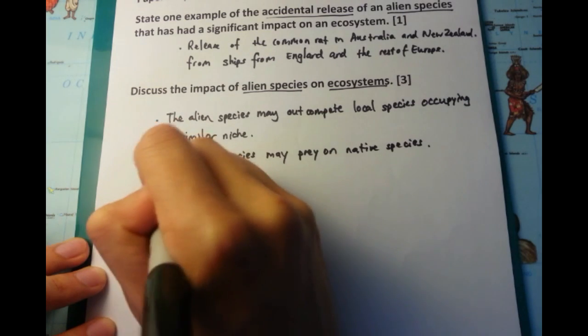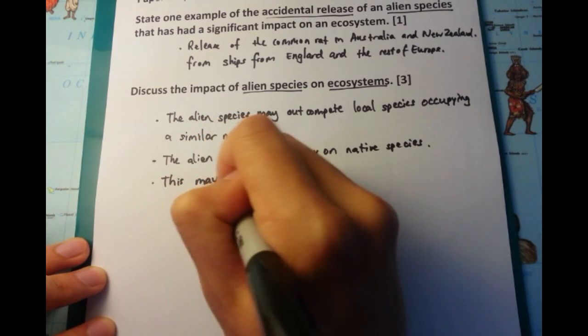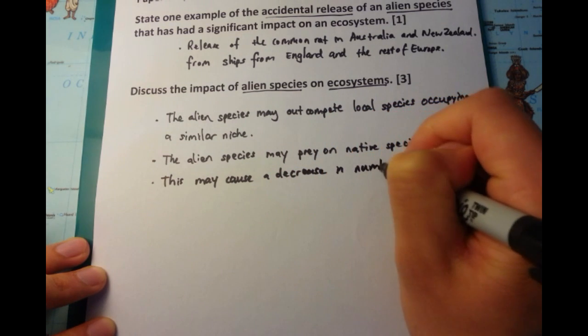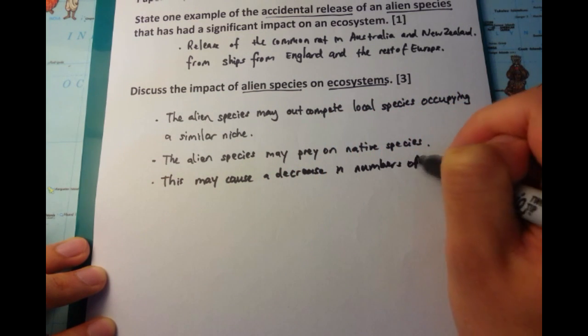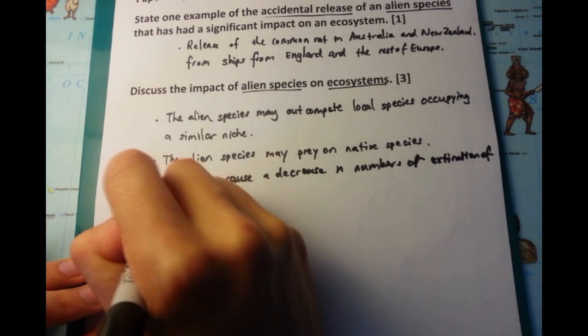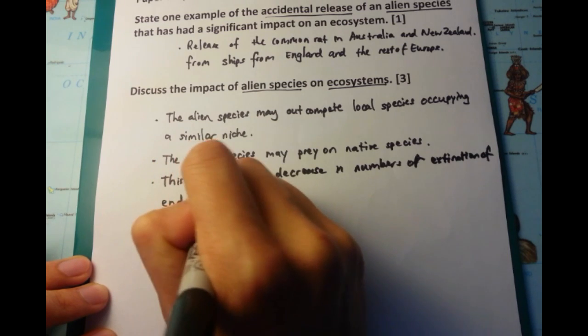So apart from outcompeting them, the alien species might directly contribute to the demise of that particular species by preying on them. And if that particular species is already low in numbers, if it's already endangered, then that could cause such a decrease that it could cause extinction of that particular species.